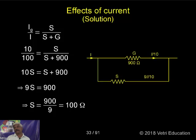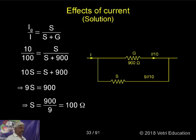For a voltmeter, V is equal to Ig into R plus G.